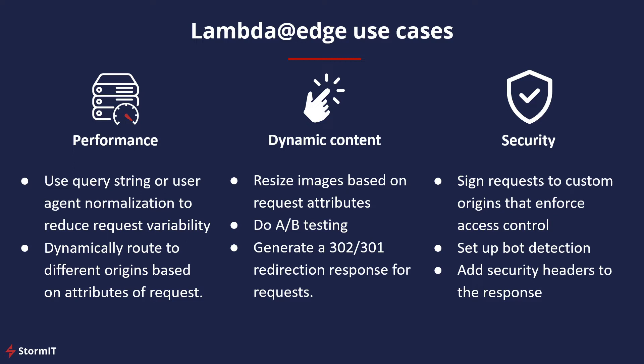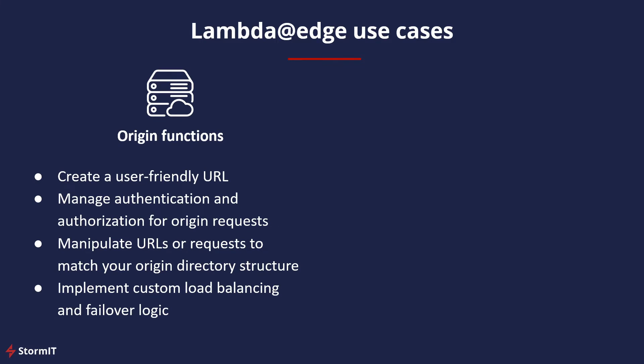The third use case is security. Lambda at Edge can be used to handle custom authentication and authorization, like signing requests to custom origins that enforce access control, and you can add security headers to responses. The fourth use case is origin functions — in some cases the origin requires additional request and response logic. You can create user-friendly URLs, manage authentication and authorization for origin requests, and manipulate URLs or requests.